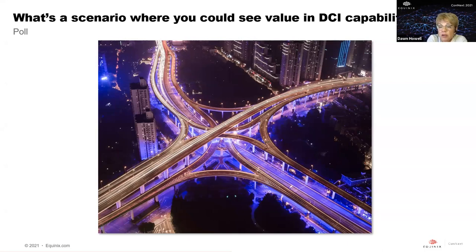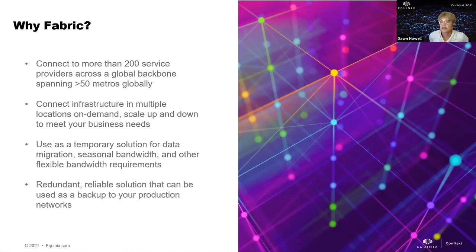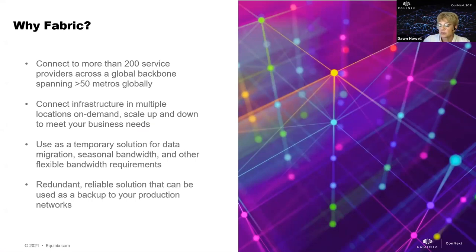To wrap it up: Fabric allows you to connect to more than 200 service providers across a global backbone spanning more than 50 metros. You can connect your infrastructure in multiple locations on demand and scale it up and down to meet your business needs. You can also use fabric as a temporary solution — some customers use it for data migration, turning up connections between two locations for a couple of months then turning them down when no longer needed. Seasonal bandwidth, backup to production networks, and any other flexible requirements are also common use cases. It is a redundant, reliable solution.